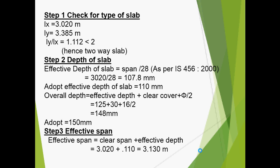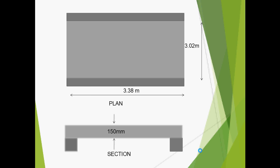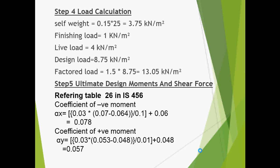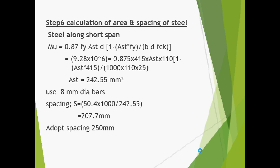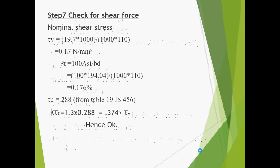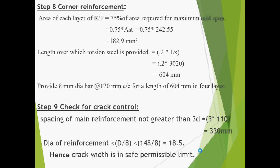The effective span was calculated. You can see the plan and section showing the dimensions of the slab. Depth and load calculations were done from IS code books. Ultimate design moments and shear force were calculated. Area and spacing of steel were calculated, with spacing updated to 250 mm. The slab was checked for shear force and came out satisfactory. Corner reinforcement was provided so that the beam does not uplift at corners, and crack control was done for even load distribution on the slab.